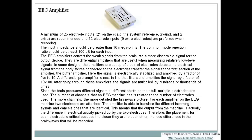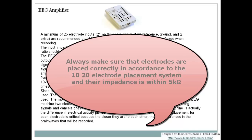With higher channel counts — 64 or up to 128 — the extended 10-10 electrode placement system is used instead of the standard 10-20 system. More channels yield a more detailed brain wave picture. For each amplifier, two electrodes are attached; the amplifier translates differing incoming signals and cancels identical ones. The output is the difference in electrical activity between the two electrodes — specifically the potential difference between the active and reference electrode — making precise electrode placement critical.